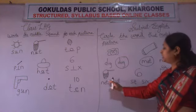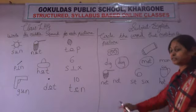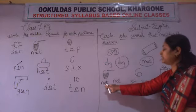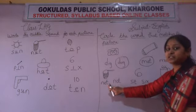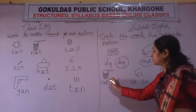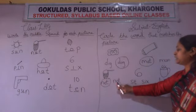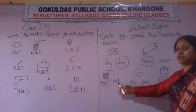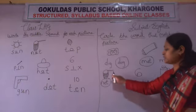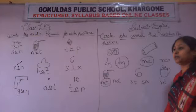Now next picture — look here. This is picture of net. N-E-T — net. So what we will do? We will circle. N-E-T — net. If 'not' is matching with this picture? No. So what we will do? We will not do any circle.